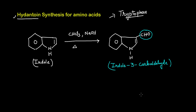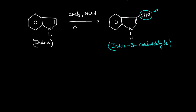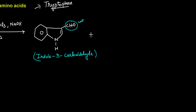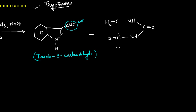This Indole-3-Carboxaldehyde is used to react with hydantoin. Hydantoin has the structure: NH — C=O — NH — C=O, forming a five-membered ring. This compound is known as hydantoin, and that is why this method is also known as the Hydantoin Synthesis.